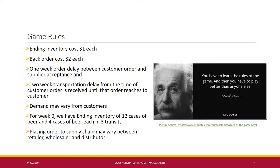For the starting condition of the game — week zero — there is an ending inventory of 12 cases of beer and four cases of beer in each of three transits. Placing an order to the supply chain may vary between a retailer, wholesaler, and distributor. These are the basic game rules for the beer game.